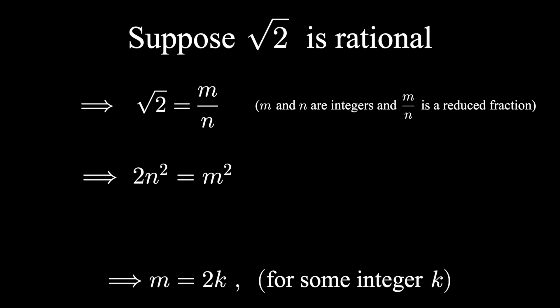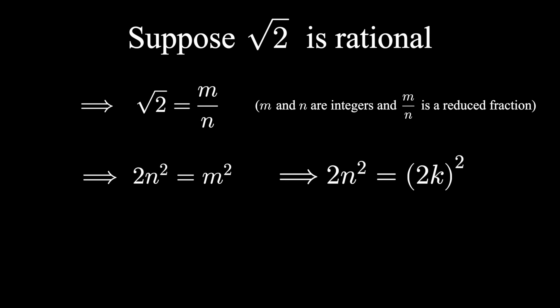Now we can substitute this back into our equation. So 2n squared equals 2k squared, or 2n squared equals 4k squared, or n squared equals 2k squared. And this is just another way of saying that n squared is even. N squared is written as twice an integer. And so by similar logic, n is also even.